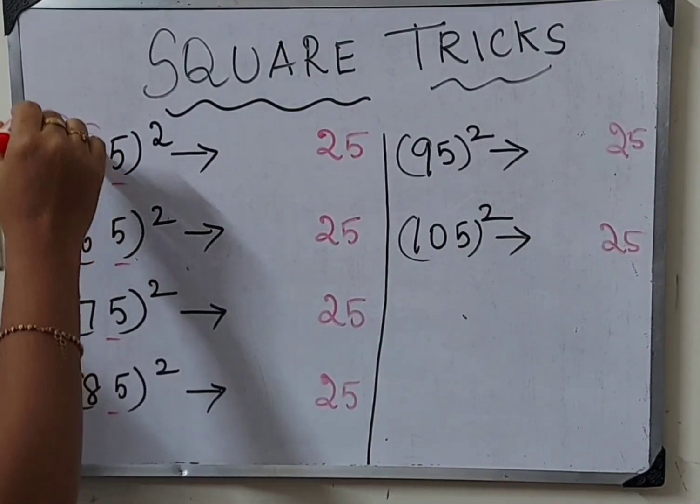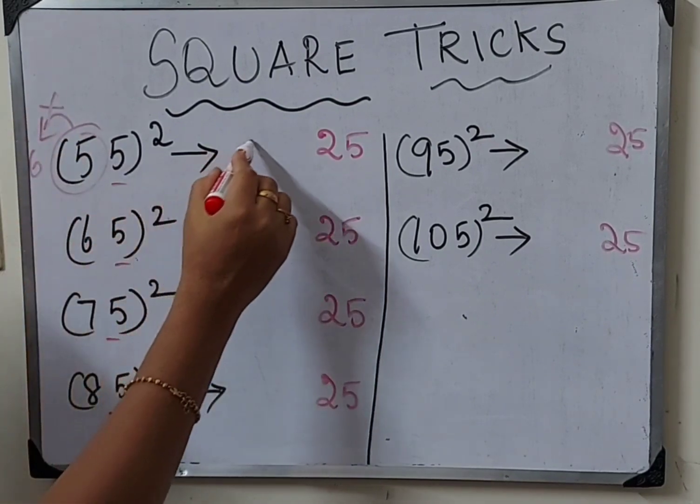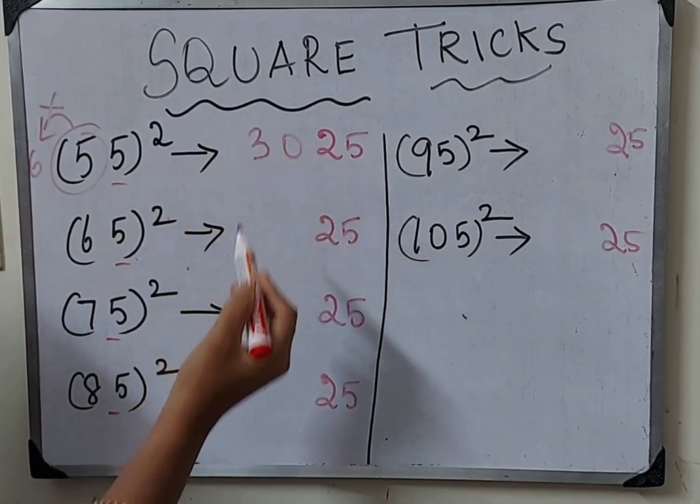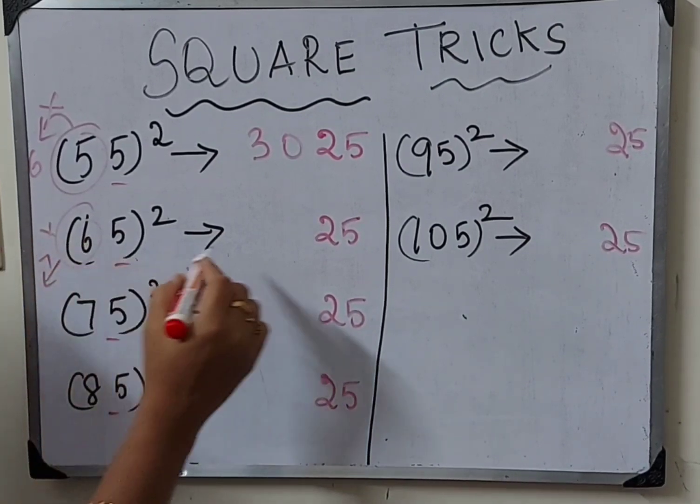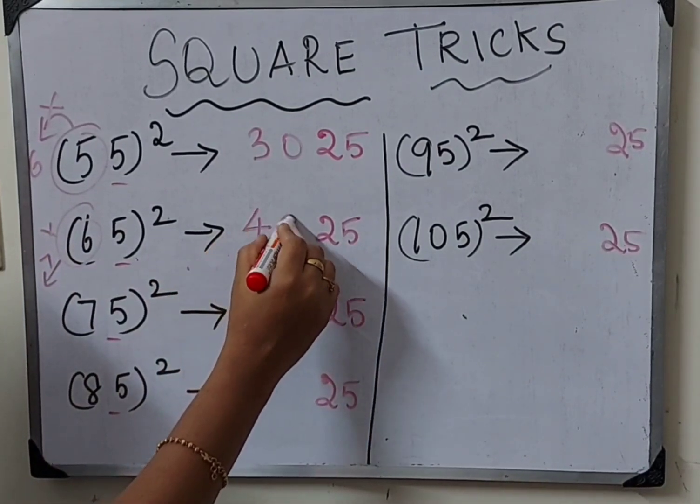For 55 square, after 5 is 6, so 6 times 5 is 30, so 55 square is 3025. Next is 65 square, after 6 is 7, so 7 times 6 is 42.